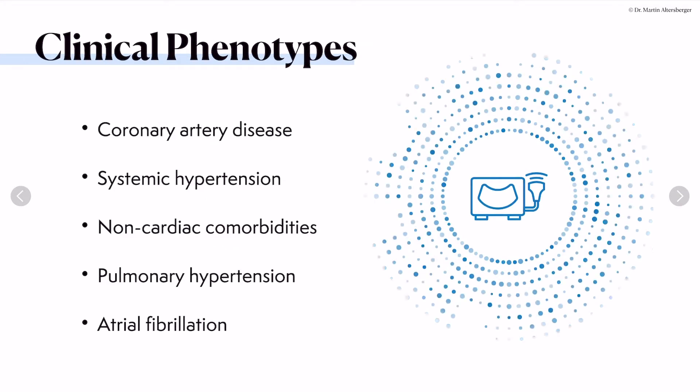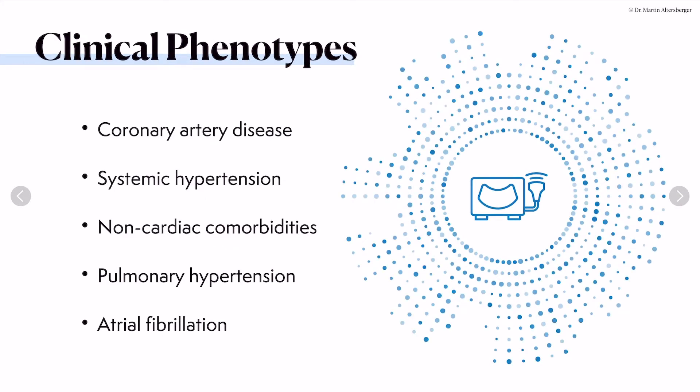First, we talk about the clinical phenotypes because those are the patients you will very often encounter: patients with coronary artery disease, systemic hypertension, and non-cardiac comorbidities such as diabetes, pulmonary hypertension, and atrial fibrillation. These are all common diseases, so it's very important to think about the possibility that they can have elevation of filling pressures and therefore also HFpEF - heart failure with preserved ejection fraction - and then proceed with, for example, the HFA-PEF score.